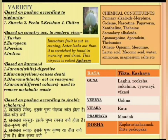According to Nighantu, Ahifane is of four types: first is Shweta, second is Peeta, third is Krishna, and fourth is Chitra. Based on country, according to the modern view, it is also of four types: Turkish, European, Persian, and Indian. Based on Karma, it is classified as: Jaran (white, digestive), Maran (yellow/Peeta, fatal — can cause death), Dharan (black/Krishna, acts like Rasayana), and Saran (Chitra, helpful in metabolic waste removal).